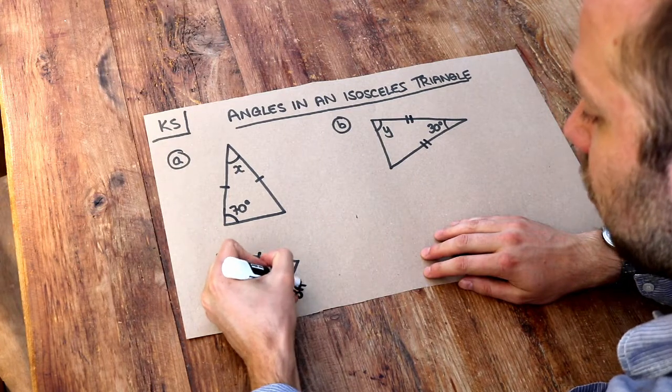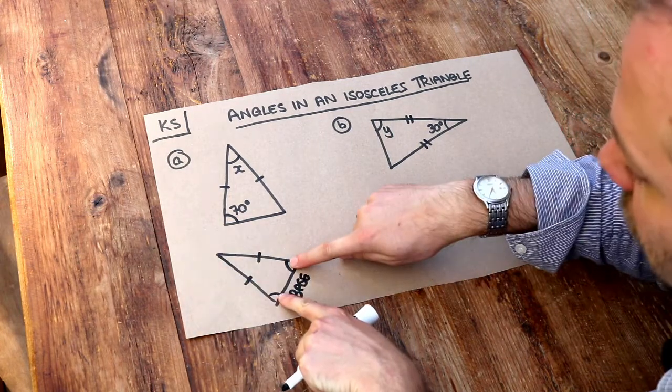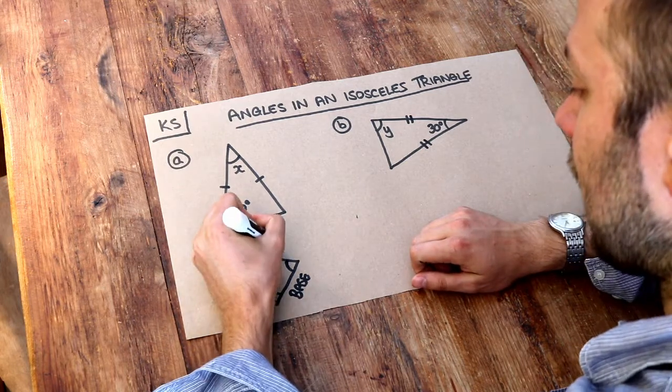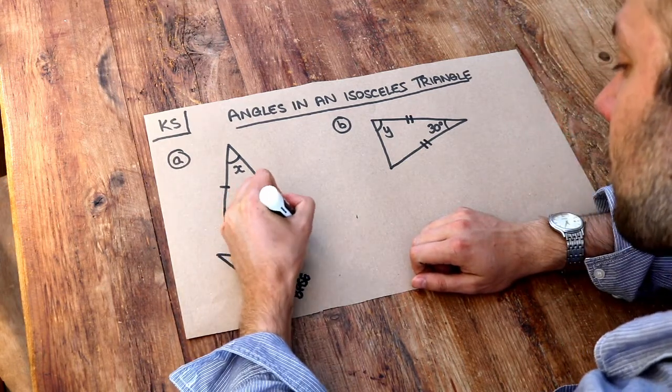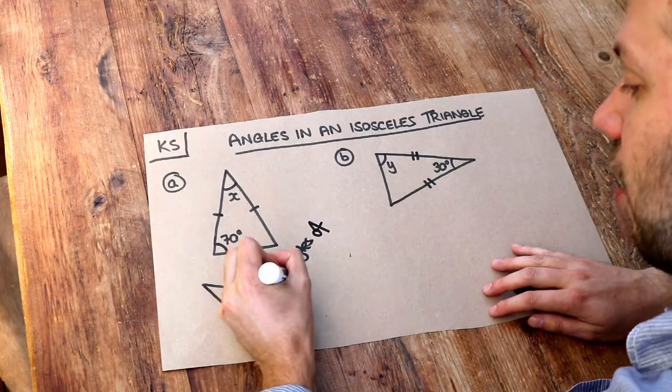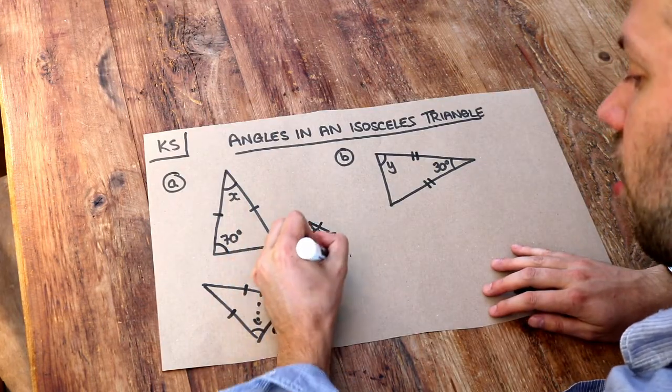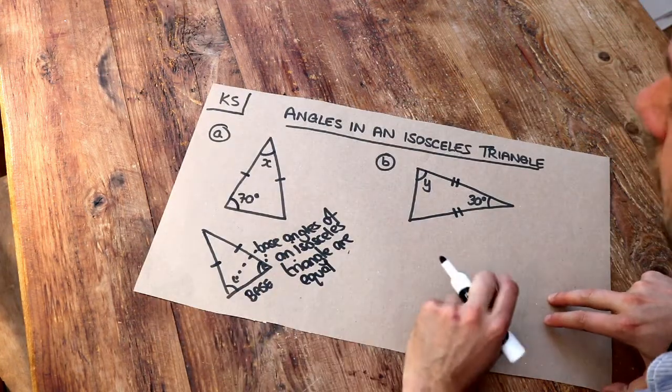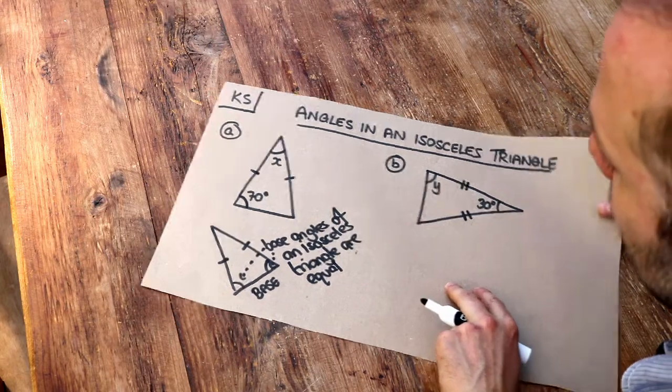Now this is known as the base here of the triangle where you've got these two angles which are the same and these are known as base angles. We say that base angles of an isosceles triangle are equal and you should learn that phrasing there if you ever need to justify why certain angles are the same.